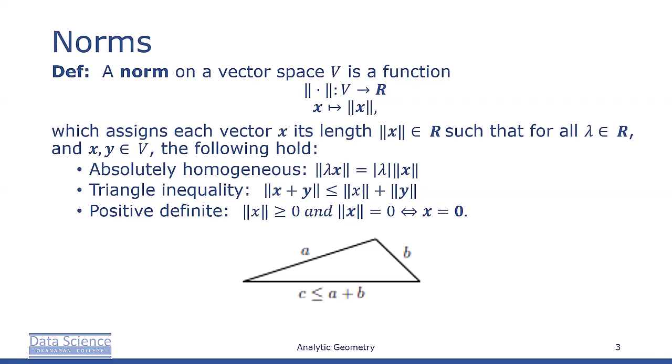This definition is in terms of a general vector space V, but here we're only going to consider finite dimensional vector spaces Rn. A vector x in Rn consists of elements, and we'll refer to specific elements using the subscript x sub i.